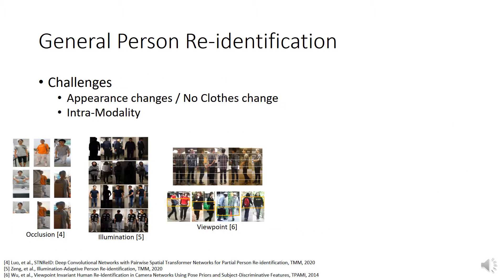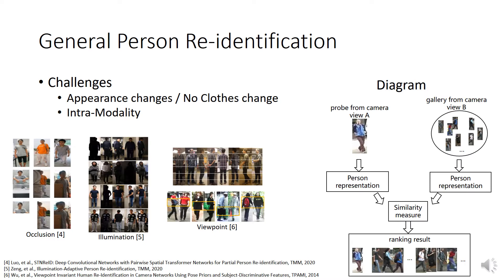General person re-identification addresses the challenges of appearance changes of each individual without clothes changing. The person's appearance may change because of occlusion, illumination change, and pose or viewpoint variation. To address the problem, existing methods use a standard pipeline: for probe and gallery images, we first extract features by a person representation module, then features are compared by a similarity measurement module. After obtaining the ranking list, we can also use re-ranking methods to optimize the list.